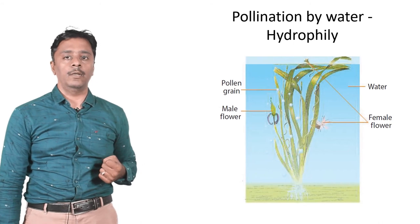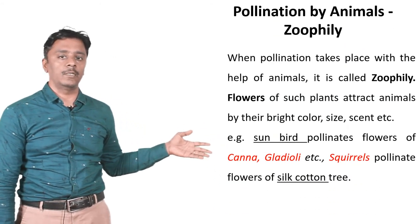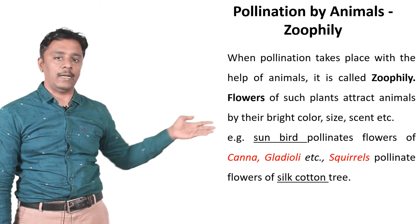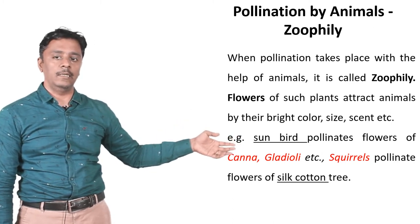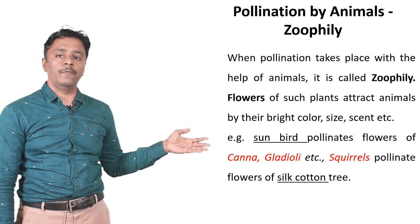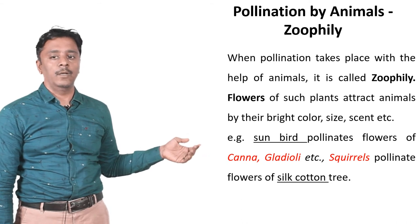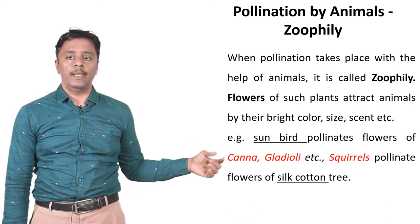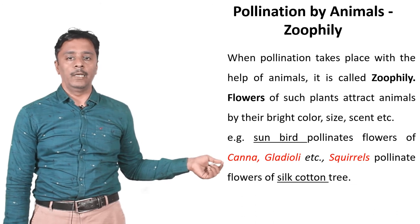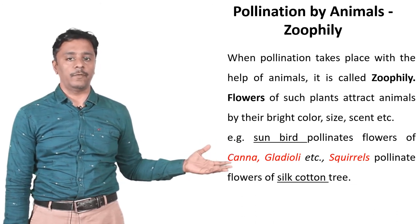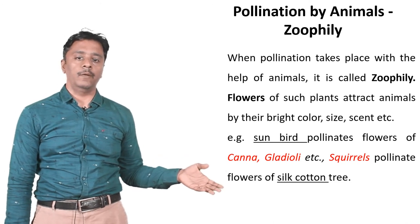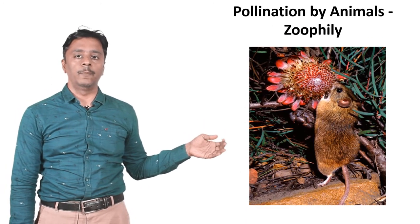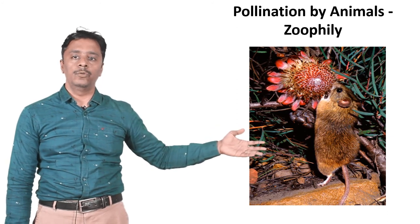Pollination by animals is called zoophily. When pollination takes place with the help of animals, it is called zoophily. Flowers of such plants attract animals by bright color, size, scent, etc. Examples: sunbirds pollinate flowers of canna and Gloriosa; squirrels pollinate flowers of silk cotton trees. These are important one-mark questions that will be asked in the exam.